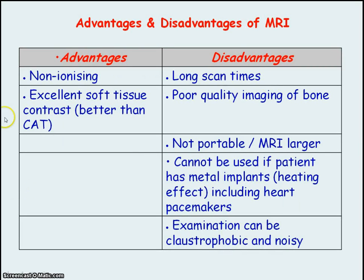MRI is non-ionizing because it uses radio waves, and it has excellent soft tissue contrast, which is better than CT. However, imaging of bone is not good. It cannot be used if patients have a metal implant, because the metal may heat up due to the magnetic field. It also cannot be used if patients have pacemakers, as the magnetic field may affect them. Additionally, MRI may not be suitable for people who suffer from claustrophobia, and it can also be very noisy.